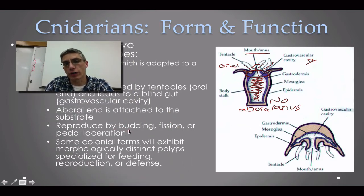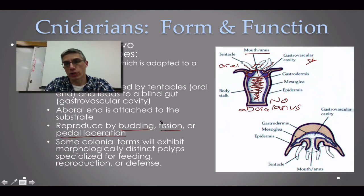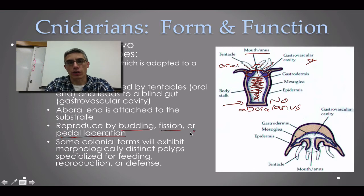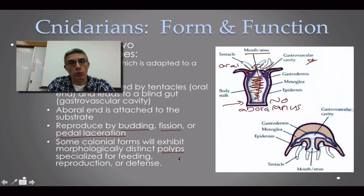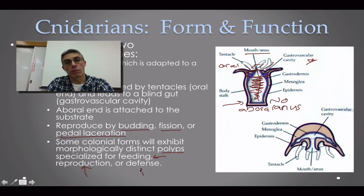Most polyps in the cnidarians reproduce by budding, by fission, or by pedal laceration — where the pedal disc is split as another means of reproduction. There are colonial forms that exhibit morphologically distinct polyps; in corals, for example, certain polyps are specialized for feeding, some for reproduction, and others for defense. This completes the polyp body form.